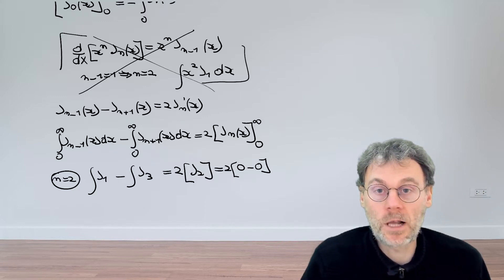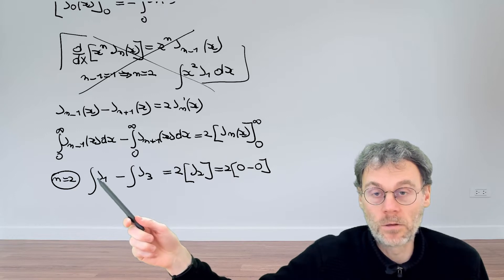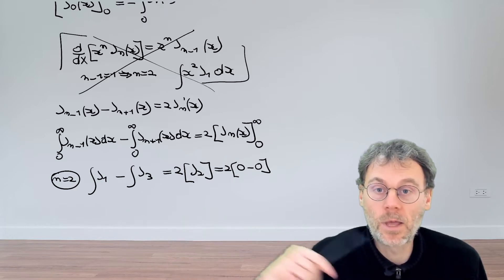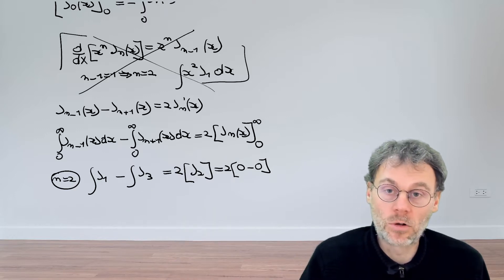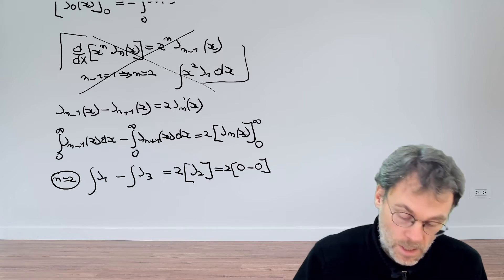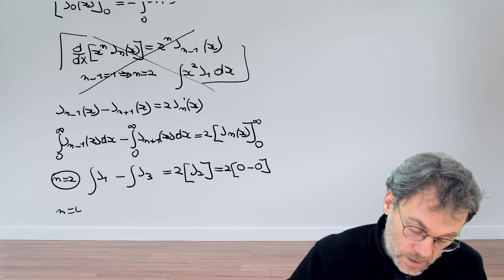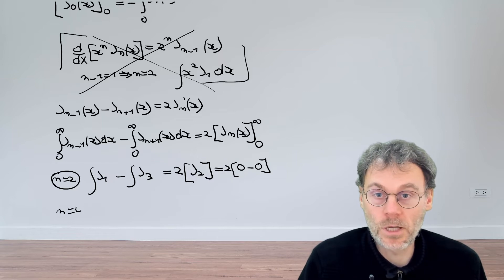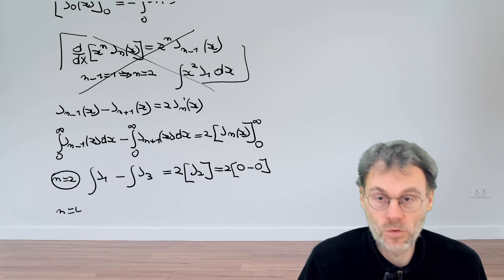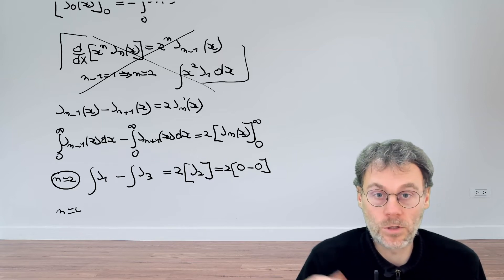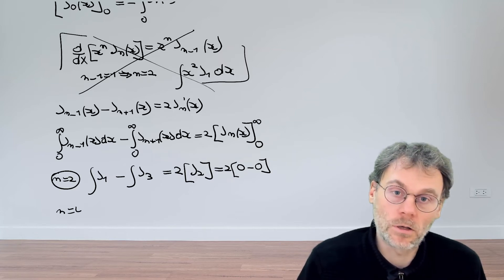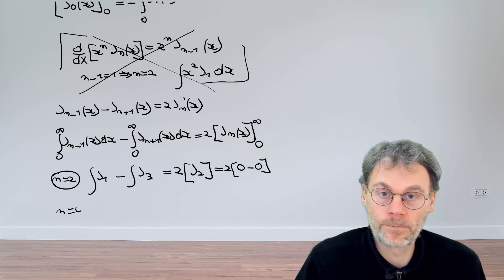This tells us that the integral of J₁ — which we calculated to be 1 — is exactly the same as the integral of J₃. And then we can keep playing this game by plugging in different values of n, so that finally we can show this is true for all possible odd orders of the Bessel function.